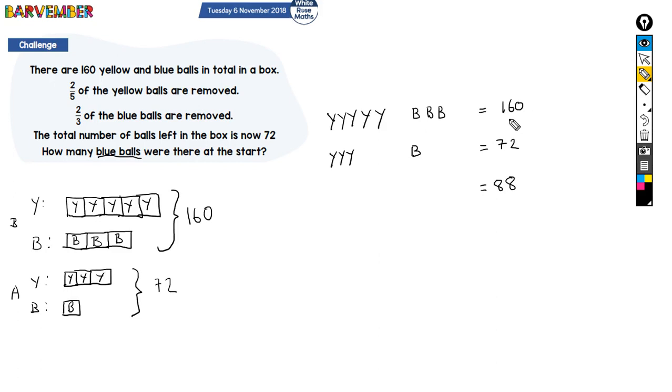So that's the difference here. What's the difference here? Well, the difference between this and this is two B's, and the difference between five Y's blocks of Y and three blocks of Y is two. So I know that two Y's and two B's are worth 88.